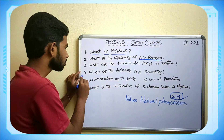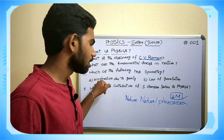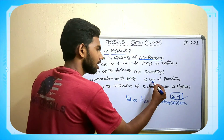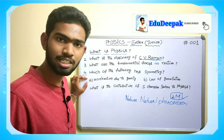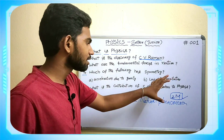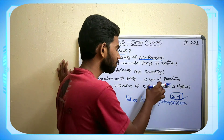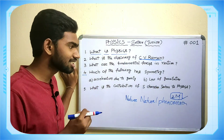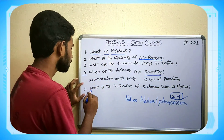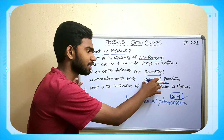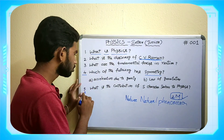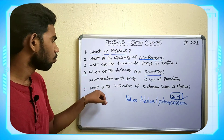The fourth question asks: Which of the following has symmetry? The two options given are acceleration due to gravity and the law of gravitation. Acceleration due to gravity changes from place to place, but the law of gravitation is constant throughout the universe — it does not change anywhere. So the law of gravitation has symmetry. We have to write option B: law of gravitation.